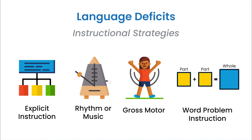Counting can be a struggle for these students as well. Use a bean bag to help students get the rhythm of counting forward and backward, as well as skip counting. We also like to use gross motor — help students tie what they're learning by getting the whole body involved. Simultaneously tie the visual, auditory, and kinesthetic to the math you're working on.